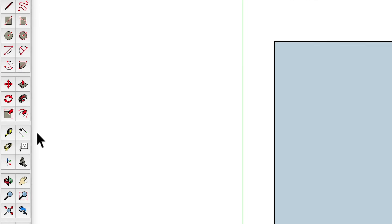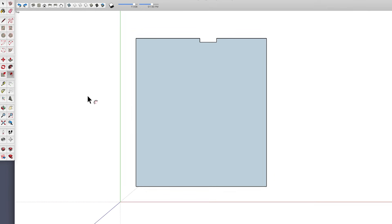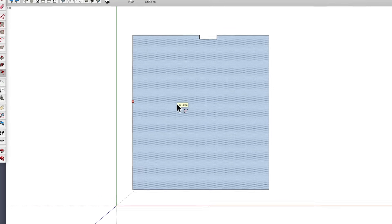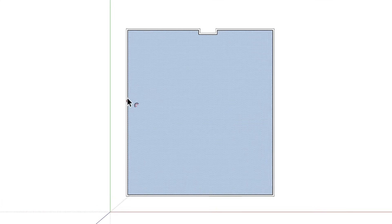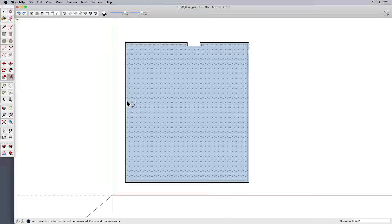Alright, once you've drawn your floor, you can use the offset tool to create your exterior walls. To do that, pick the offset tool, click once on the face, move the mouse to begin offsetting the wall, type in the dimension for your wall thickness, and press enter or return on your keyboard.